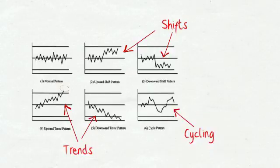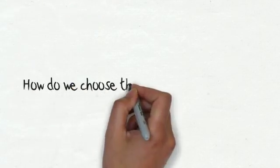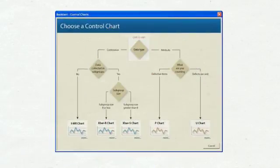The control charts are used for assessing the stability of a metric. But how do we choose the control chart? Minitab 16 offers a step-by-step guide to determine the right control chart for our data. I will cover this topic in another video tutorial.